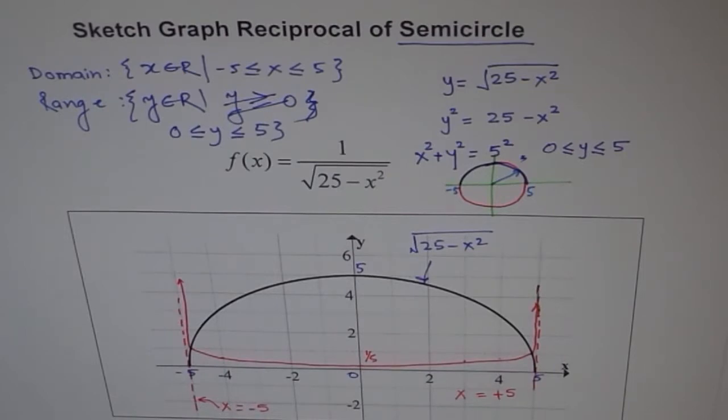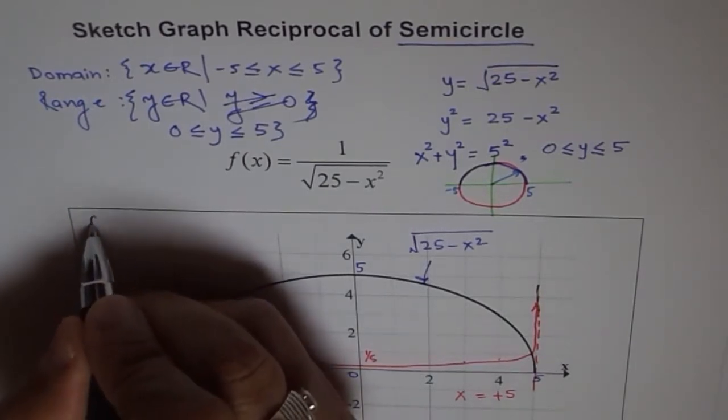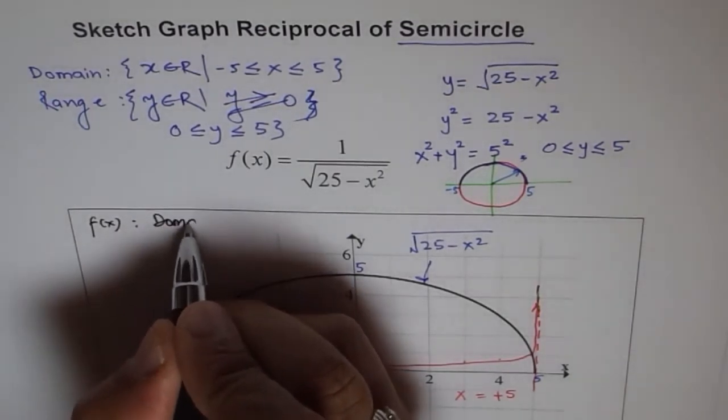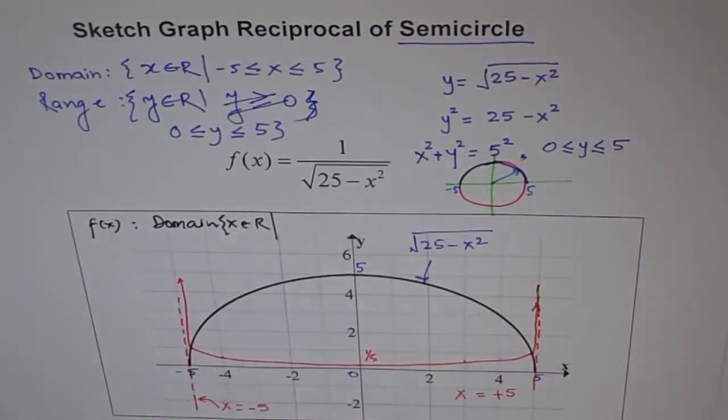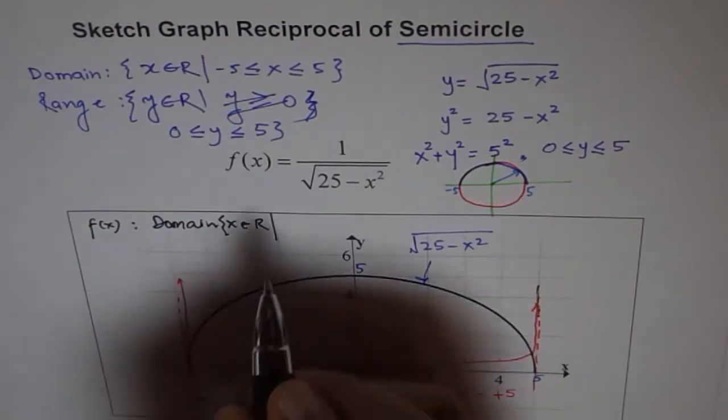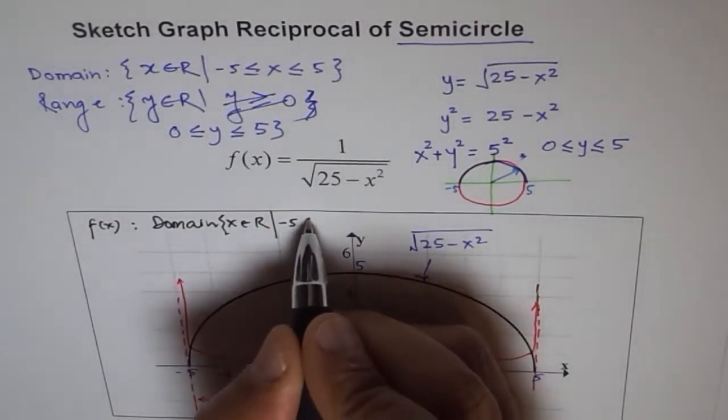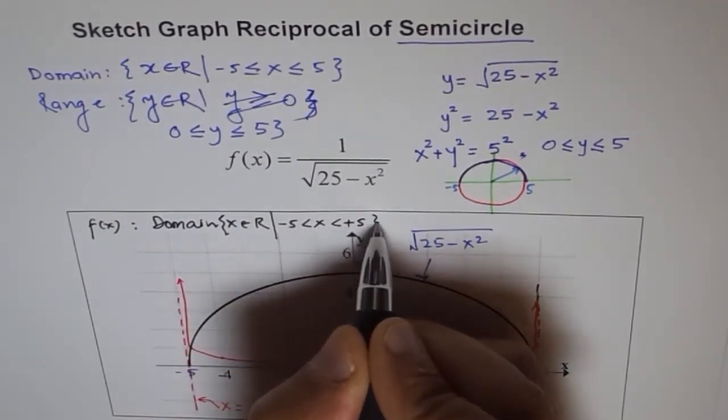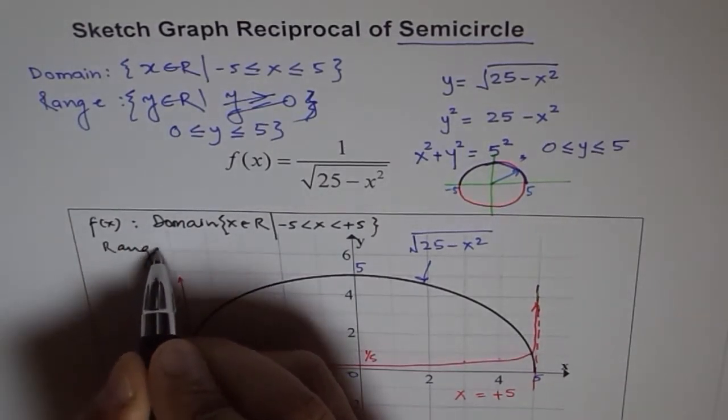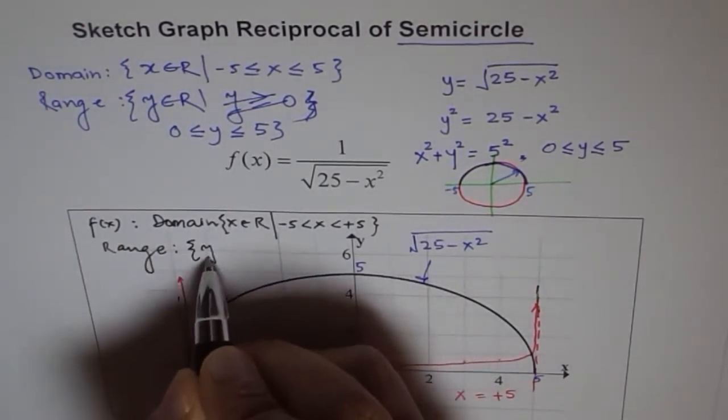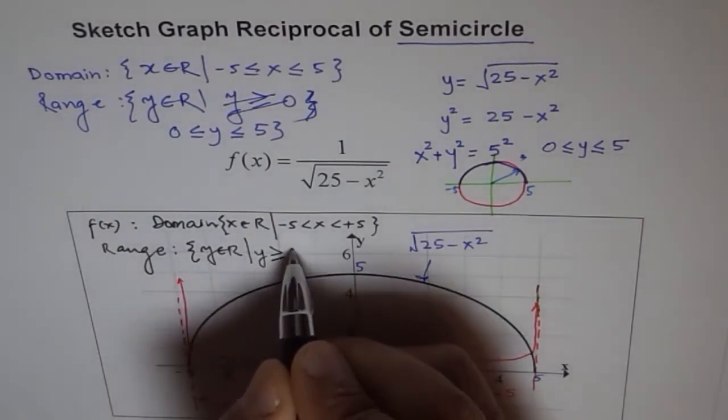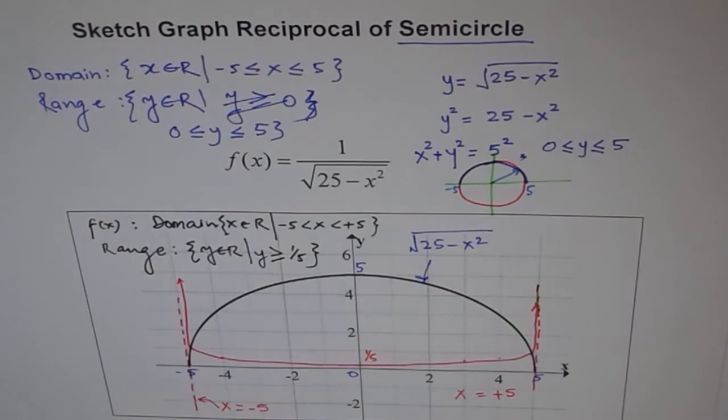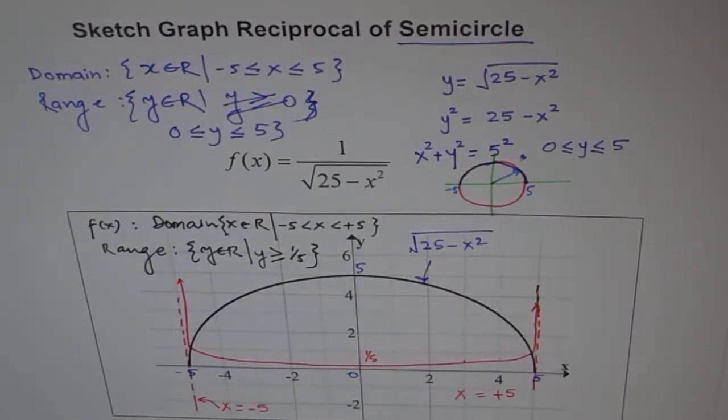So the reciprocal function, what is the domain of this reciprocal of semicircle? So domain is x belongs to real numbers such that x is between minus 5 and plus 5. Because x cannot be equal to minus 5, we have a vertical asymptote there. And the range, y belongs to real numbers such that y is greater than or equal to 1 over 5. So that's the domain range of reciprocal of a semicircle.